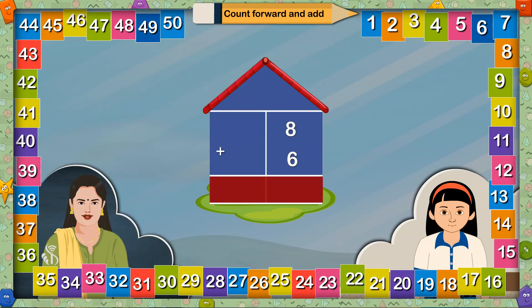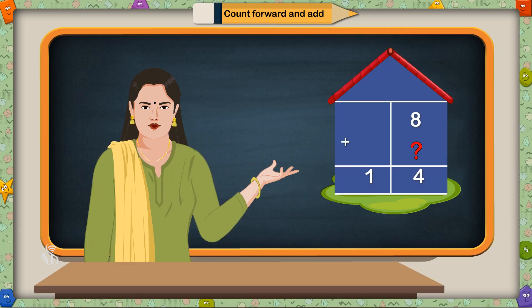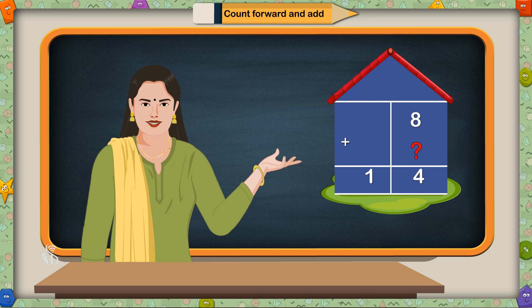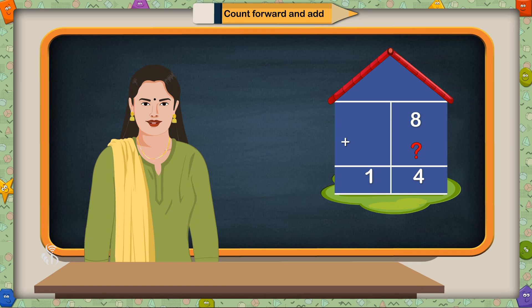8 plus 6 equals? 6 places after 8 means 14. Now we have to find out the missing number. Here there are some addition sums. There is one number and the answer is also given. The sum total of the first number and the second number should be the given answer, so you have to find out the second number.